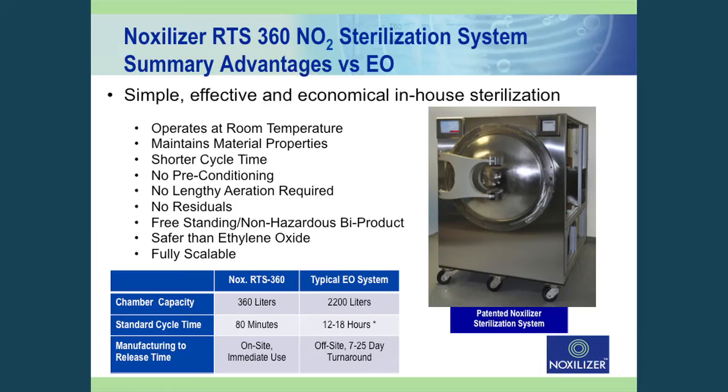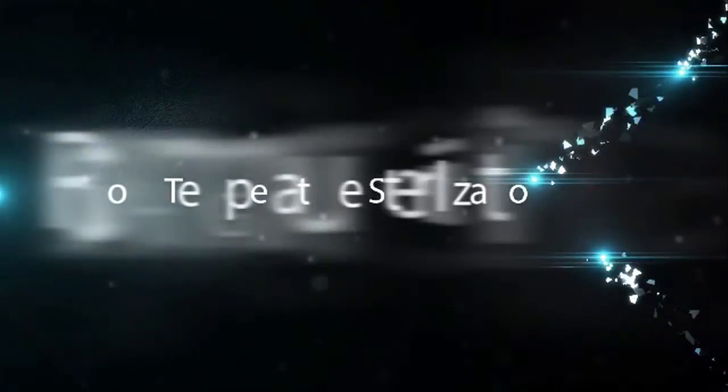The sterilizer we've been using for our testing is the RTS 360. It has 360 liters of usable space and is a room temperature sterilizer. The cycle runs off a microprocessor, pre-programmed with cycles validated for specific products. Cycle times are about 80 minutes. This is designed for on-site use — bring it in, plug it into the wall, and use it on-site.